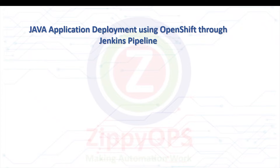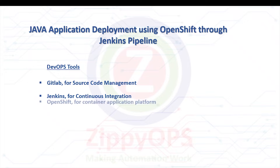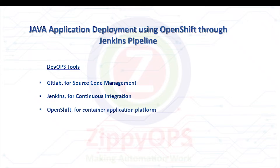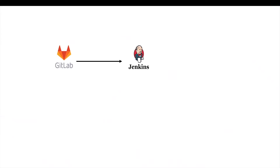The complete process is orchestrated through the Jenkins pipeline. The tools used in this Java application deployment are GitLab for source code management, Jenkins for continuous integration, and OpenShift for the container orchestration platform.